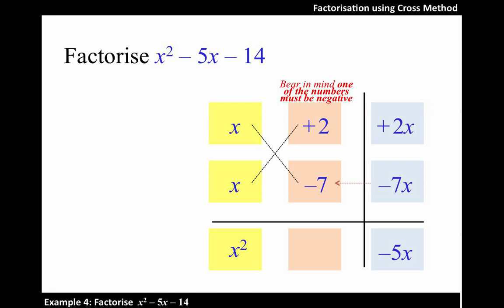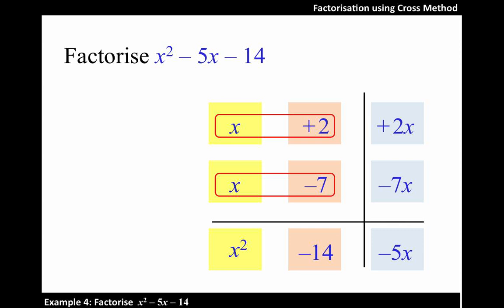Hence, now we multiply the two numbers and we get negative 14, which is as given in the original expression. Therefore, the factors are x plus 2 and x minus 7.